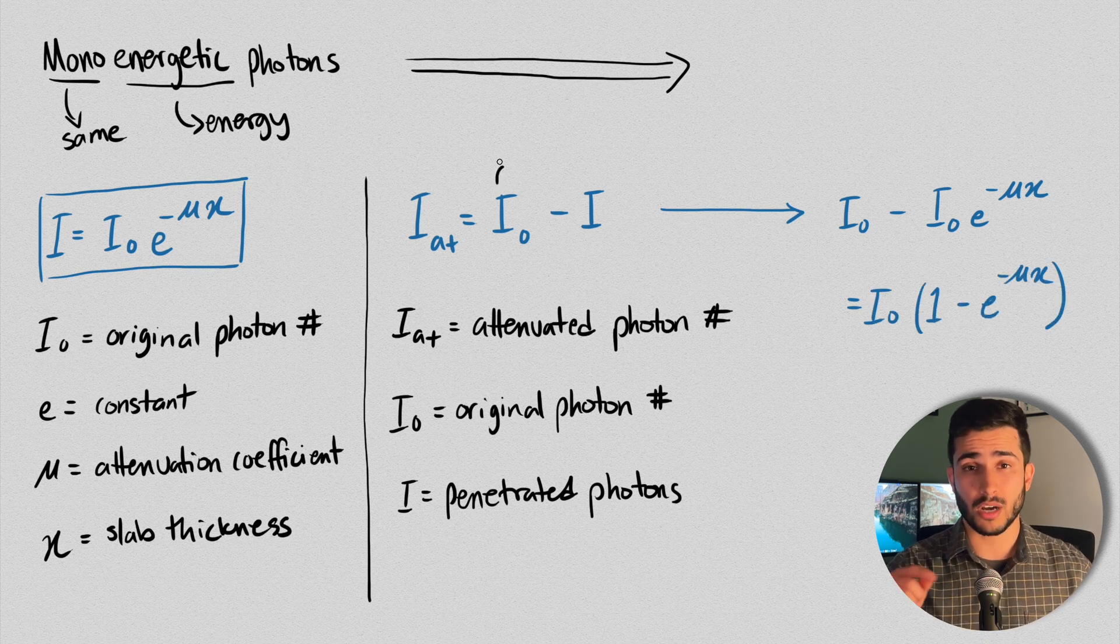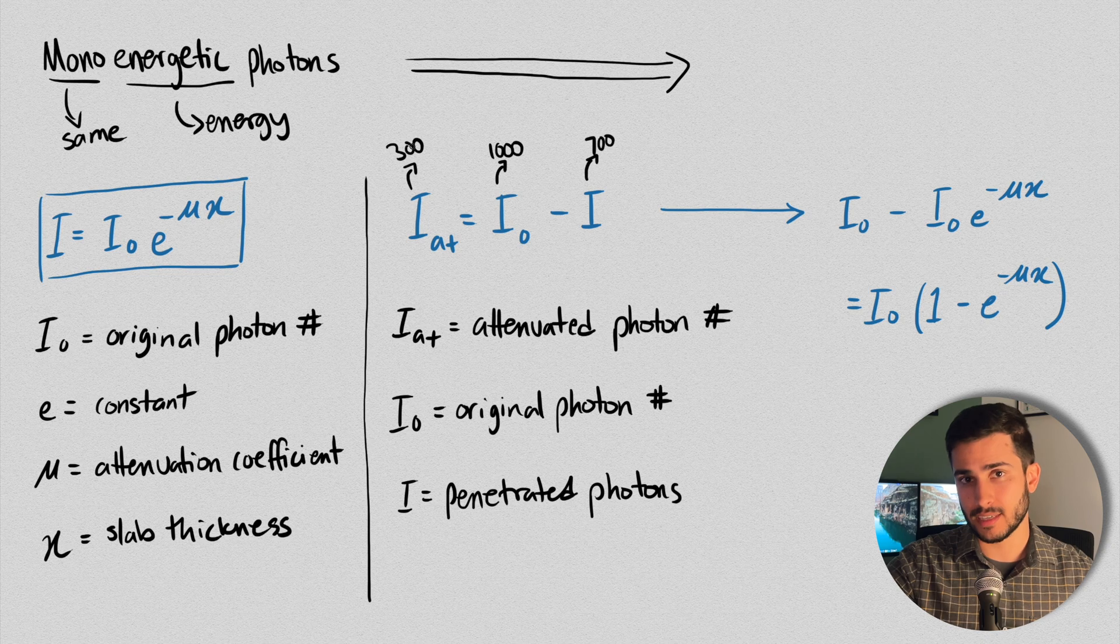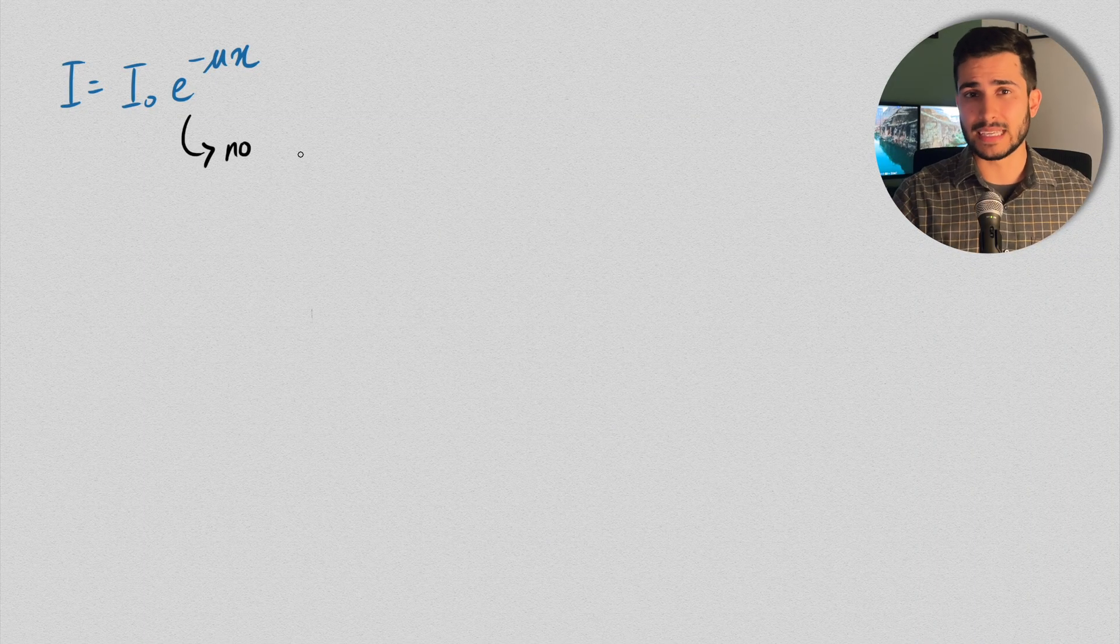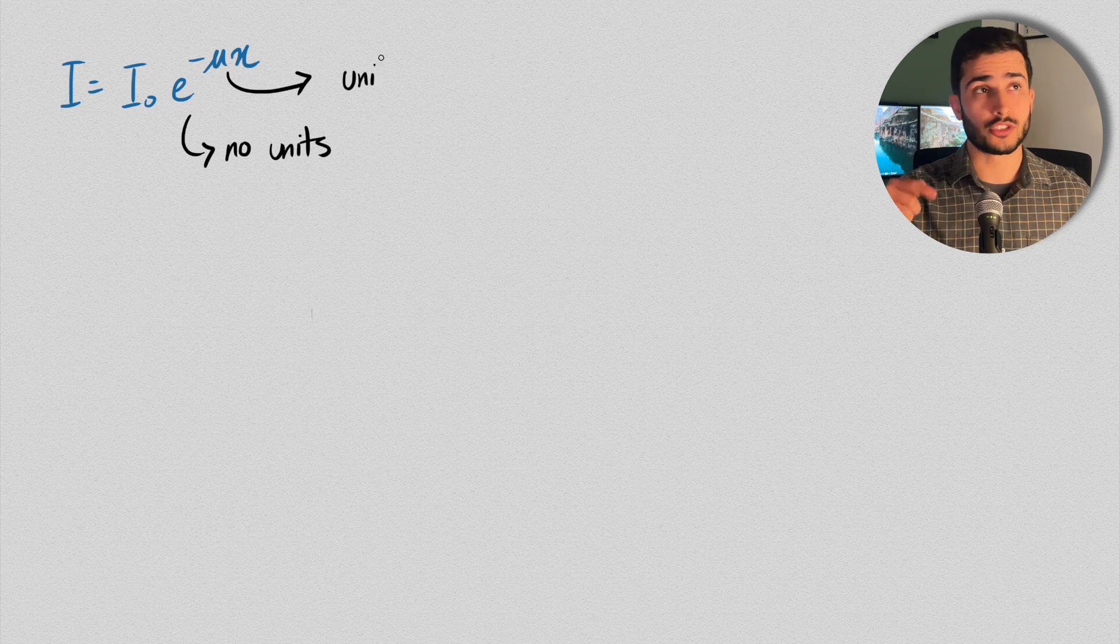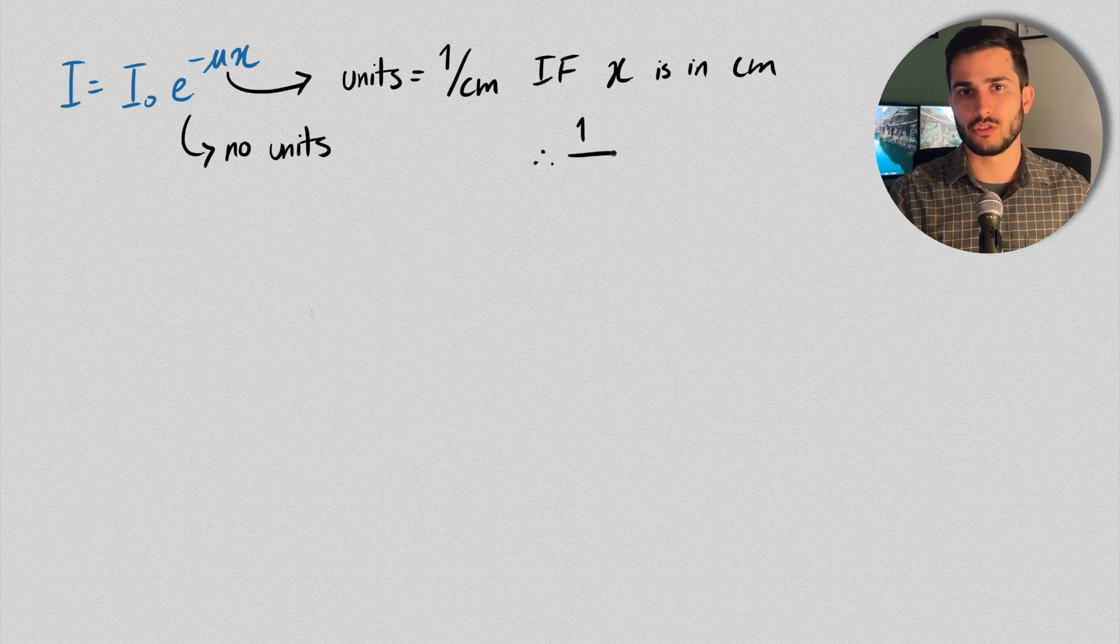So again, thinking of our original example, I₀ is like a thousand, I would be 700 that went through, and the I_AT attenuated is the 300 photons that were attenuated. It's all quite simple when you think of it in basic terms, because sometimes formulas can get scary, but the math is just a notational method of communicating what's going on. By the way, the exponent of e has no units, so therefore the units of μ is just 1 over centimeters, if the thickness of X is also expressed in centimeters.